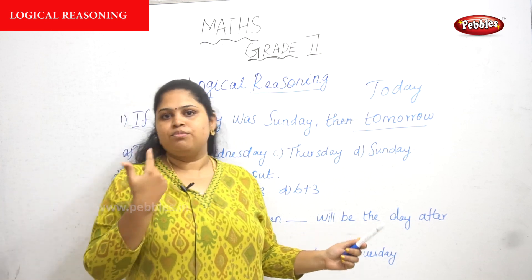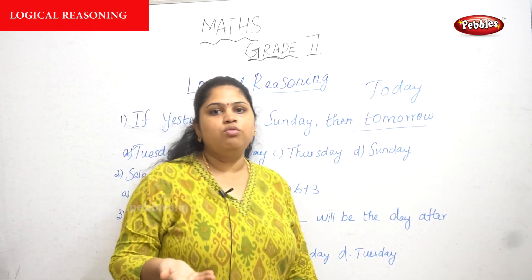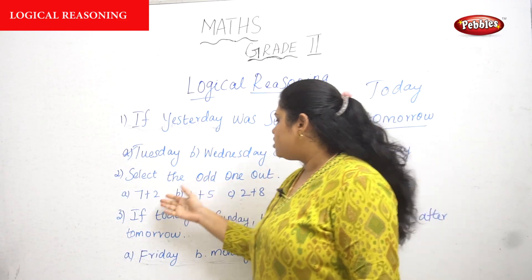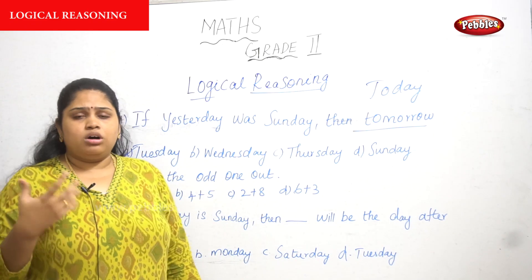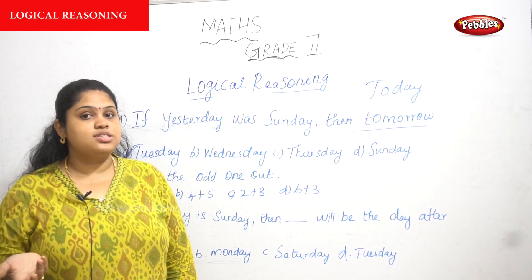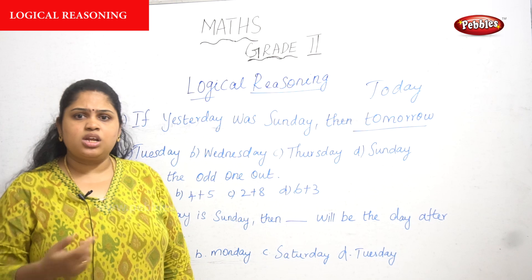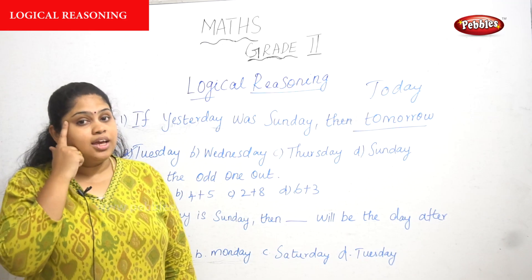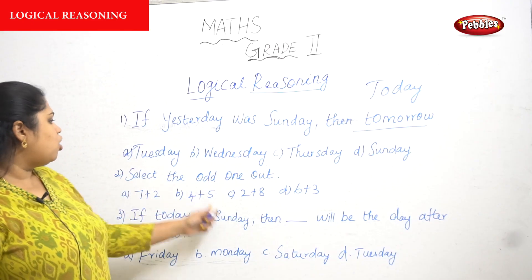Okay, next one: select the odd one out. The odd one is the one that is not the same as everything else. You may get confused or surprised. Some children ask what is certain about the odd one when everything is a two-digit addition. Think logically and find out the reason.